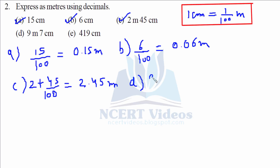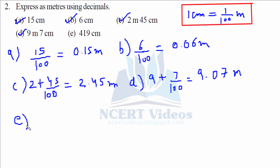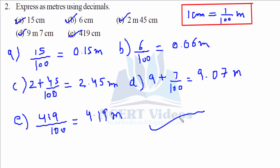For part d, 9 meters and 7 centimeters. Converting 7 centimeters into meters gives you 9.07 meters. For part e, 419 centimeters: 419 over 100 gives you 4.19 meters. That completes question number two.